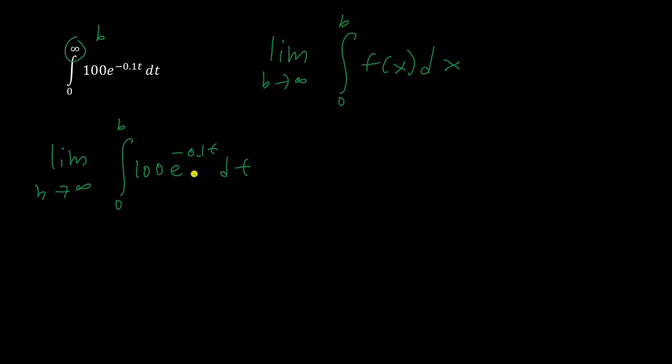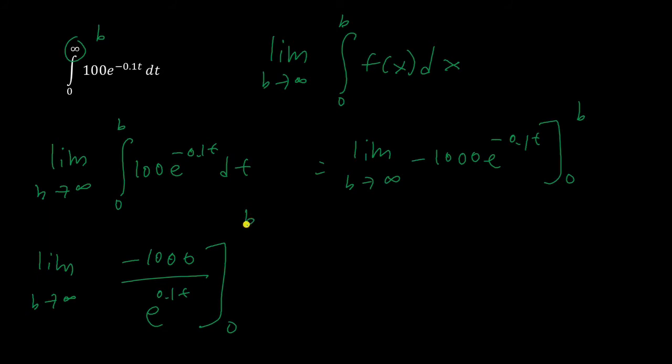If you do a u-sub, letting u is equal to negative 0.1t, this comes out to be the limit as b approaches infinity of negative 1000 e to the negative 0.1t, and the bounds are 0 and b. What I can do now is I'm going to rewrite this to make it a little bit more obvious what we're doing. So I'm going to take the e and bring it to the bottom, over e to the 0.1t from 0 to b. So now let's plug in 0 and b, like we're just evaluating a normal integral.